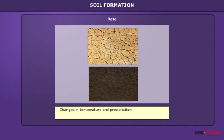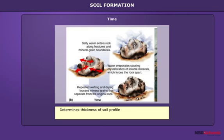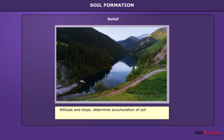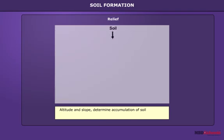Rate of soil formation mostly depends on frequent temperature changes and precipitation. The time factor is essential both for soil formation and its use. Relief — altitude, slope, and depositions like rivers and winds — also affects soil formation. Depending on the origin of soil and their evolution, soils are classified into two main groups: residual and transported soils.